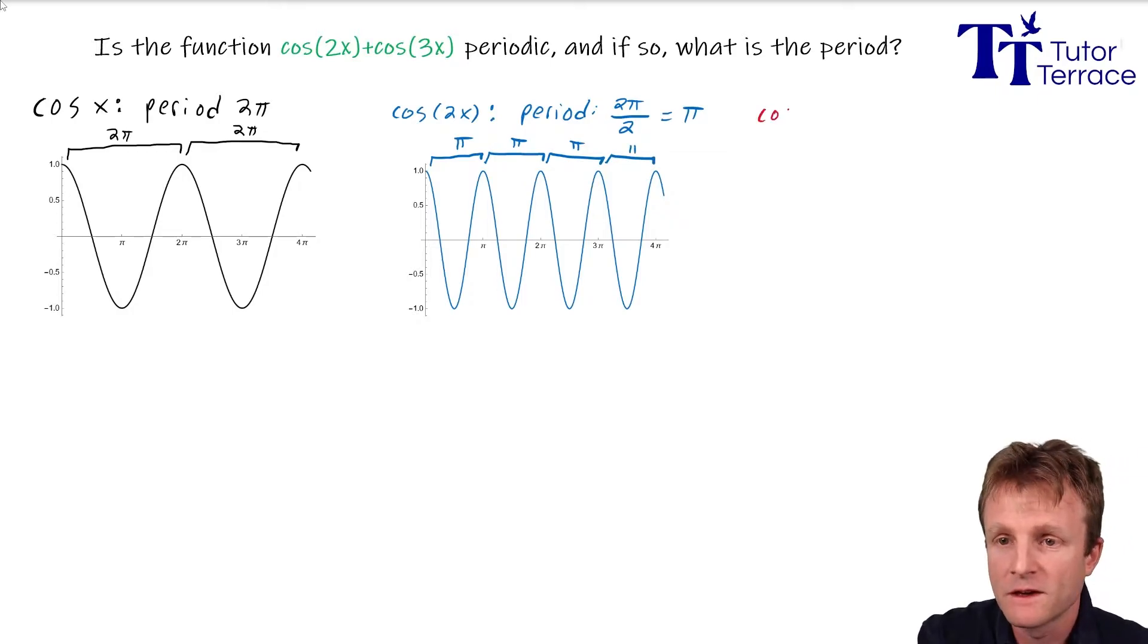And now you see the pattern. Cosine of 3x, of course, has period... I hope you didn't say 6π. Remember, it gets squished by a factor of 3. So it's 2π divided by 3. So period 2π over 3.